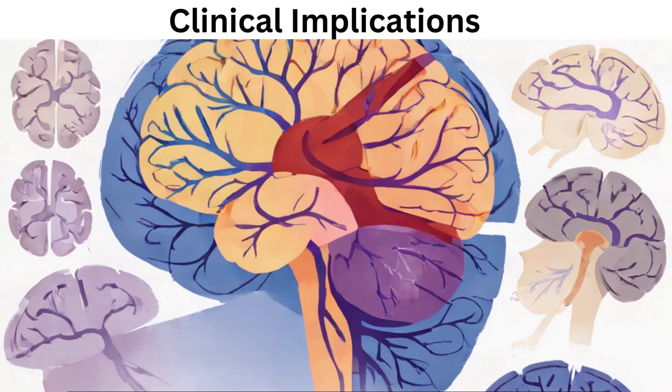Many neurological and psychiatric conditions are associated with the forebrain, including Alzheimer's disease, which affects memory; schizophrenia, which involves disturbances in perception and thought; and epilepsy, which can originate in the cerebral cortex.